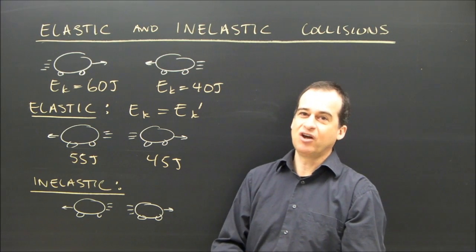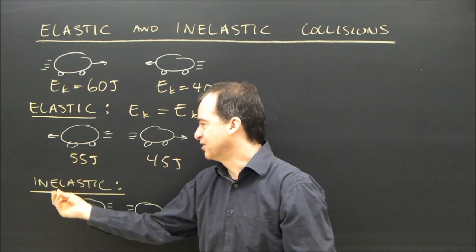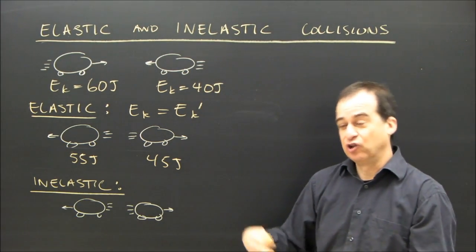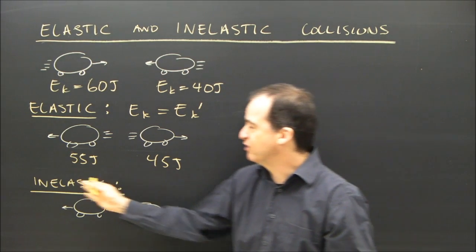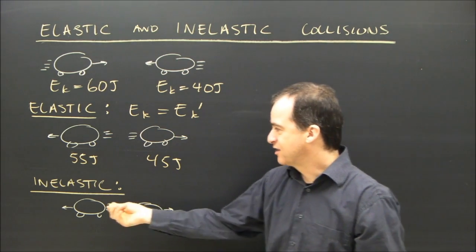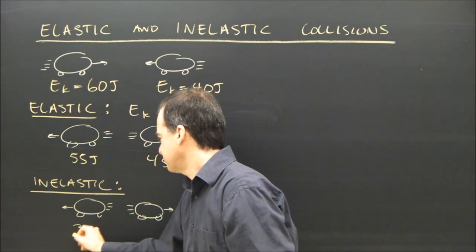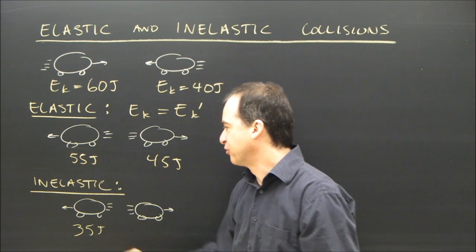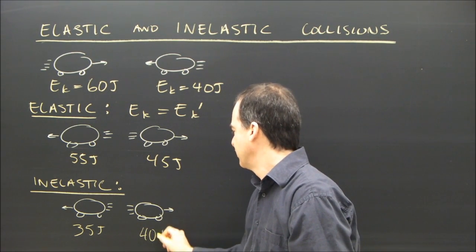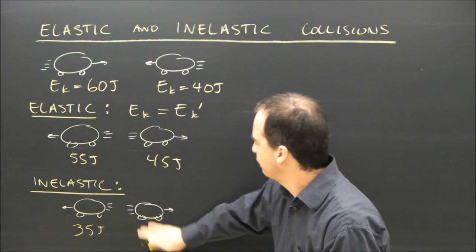Sometimes the energy is not all given back. That's an inelastic collision. And sometimes a lot of energy is lost or only a little bit of energy is lost. So there can be varying degrees of an inelastic collision. In this case, I've got two carts. In this case, this one afterwards, after this collision, might have 35 joules and this has 25 joules.